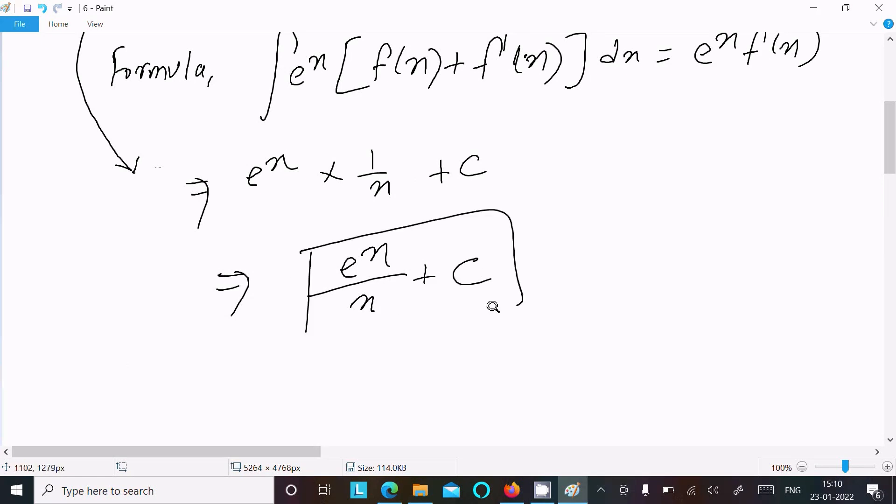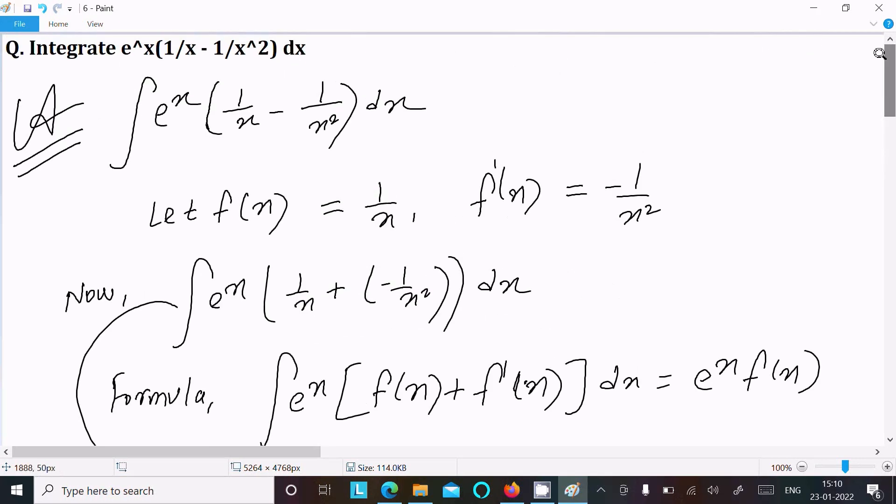So this is the answer of this question. Now, one time going to repeat: write the given, let f of x equal to 1 by x, and do the differentiation of 1 by x. That is equal to minus 1 by x squared.